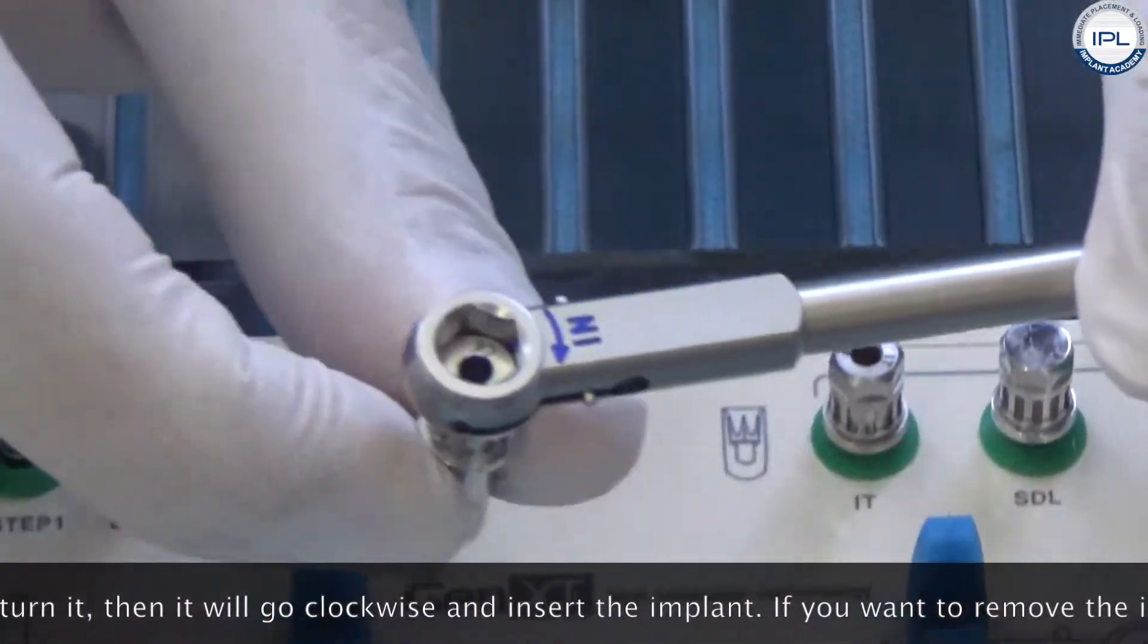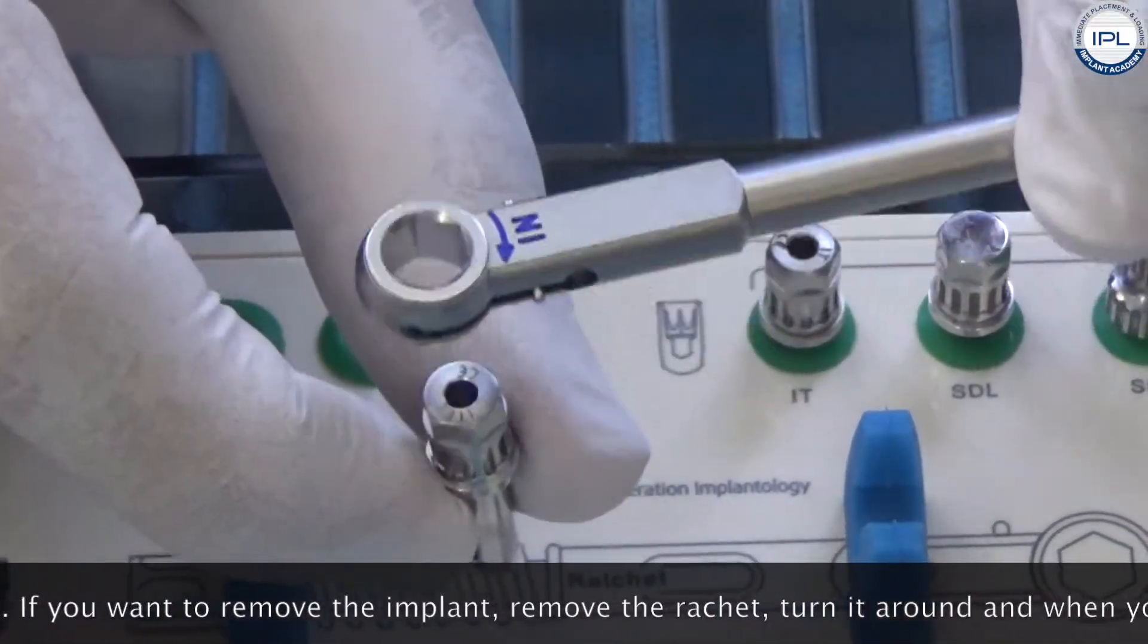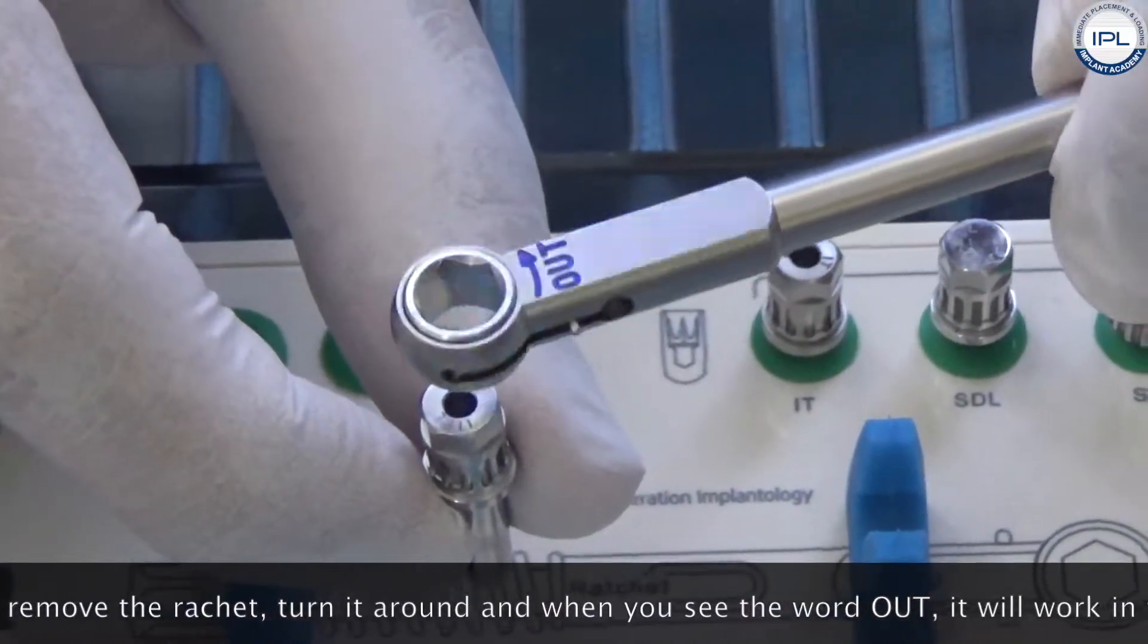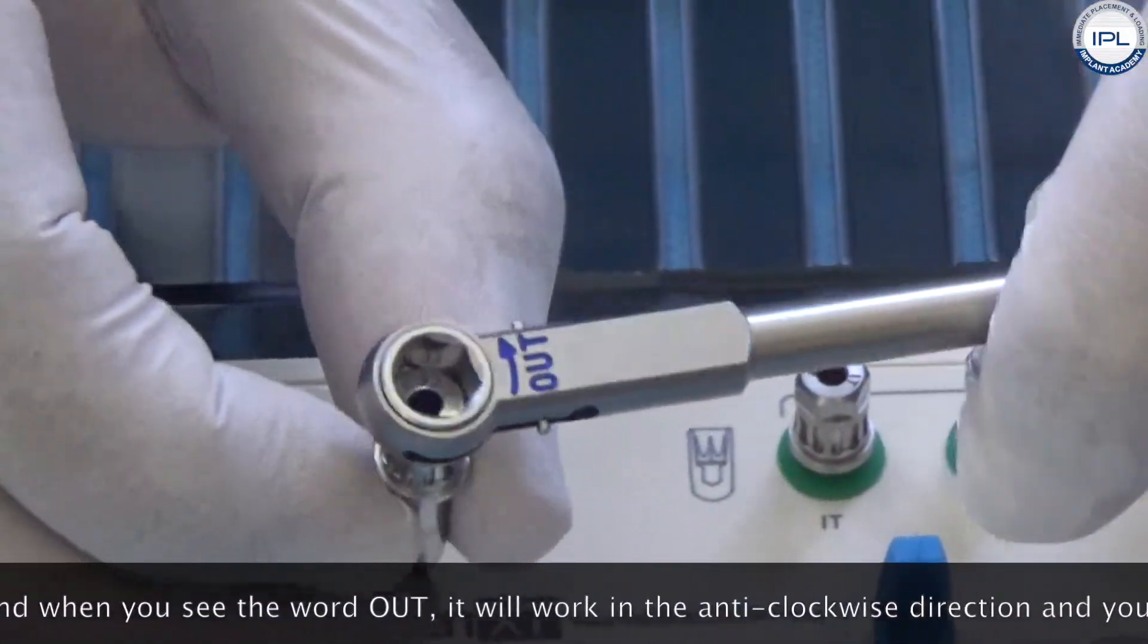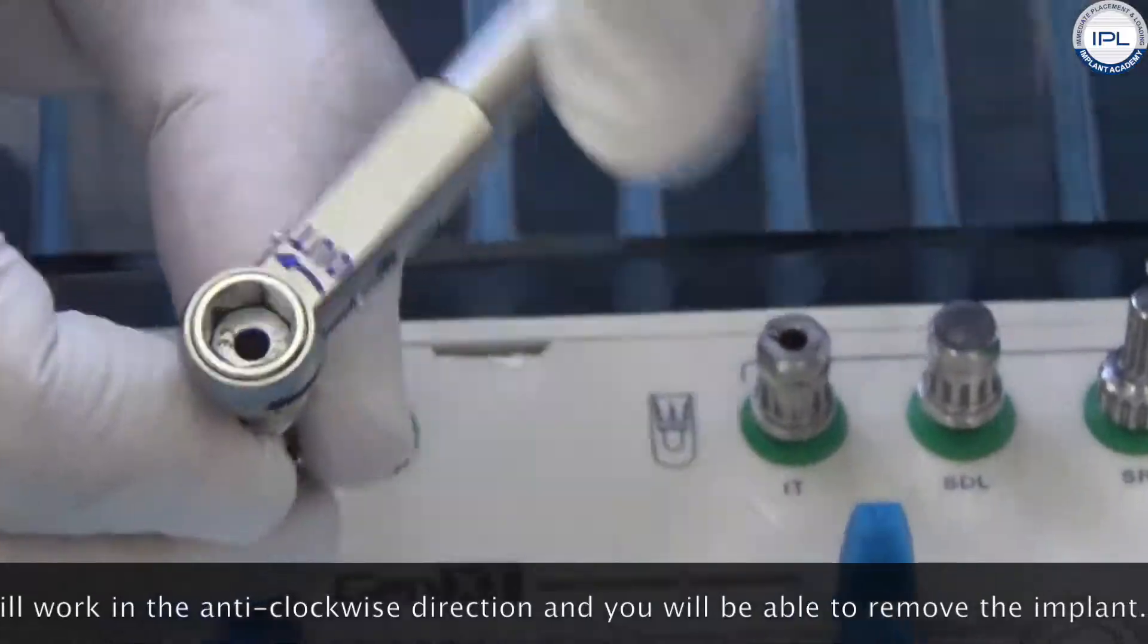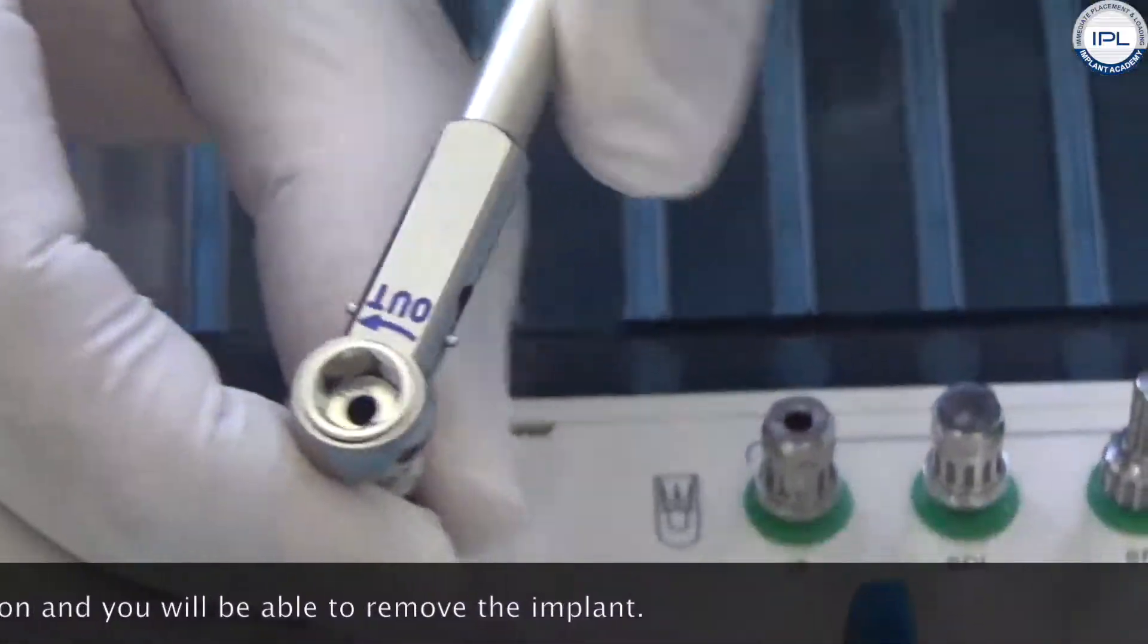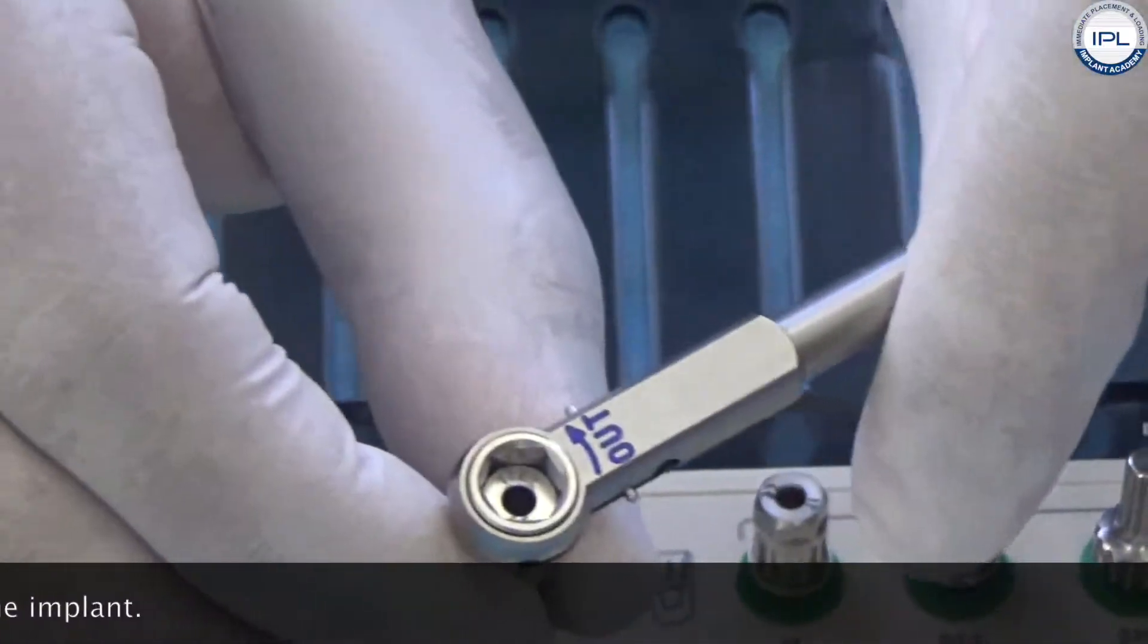If you want to remove the implant or you want to unscrew the implant for whatever reason, you remove the ratchet, turn it around, and when you see the word out it will then work in the anti-clockwise direction and you will be able to remove the implant.